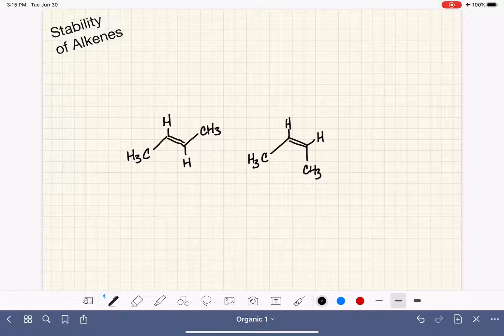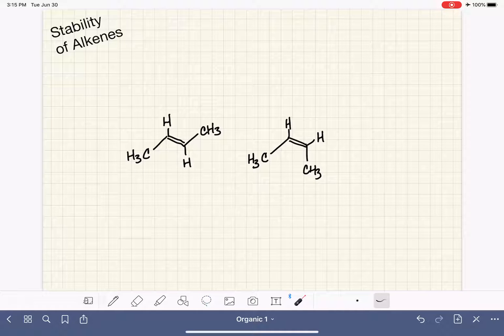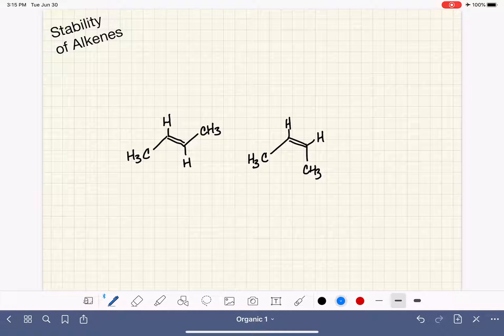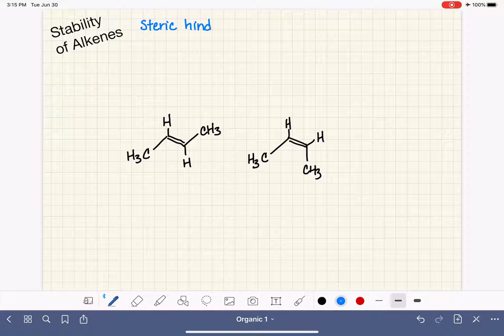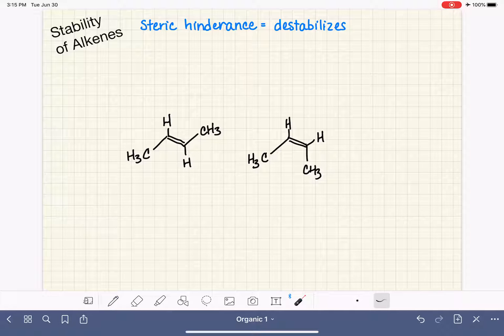In a situation like this, where the only difference is stereochemistry, we are going to compare the steric hindrance of the two alkenes. As we've talked about before, when we have steric hindrance, meaning that we have crowding, steric hindrance destabilizes the molecule, or it makes it less stable.